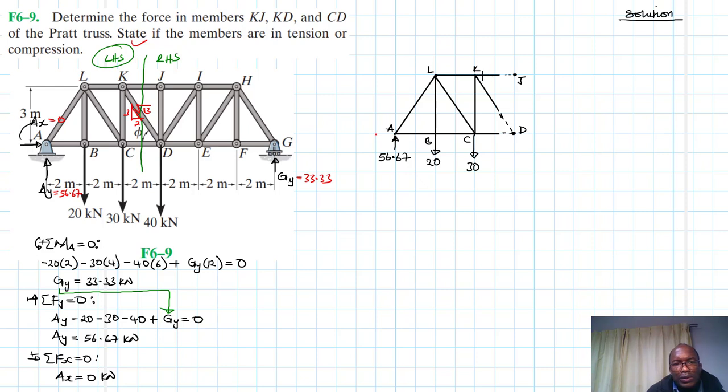The top chord is in compression, so this one here is KJ. And then the bottom chord is in tension, so this one here is CD. And let's assume this one to be in compression. This member here, let's assume this member is in compression, and this one is KD. It is going to have components we'll indicate later on.